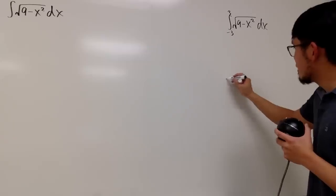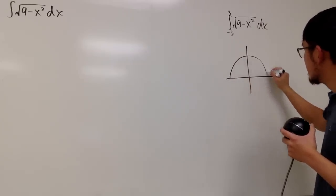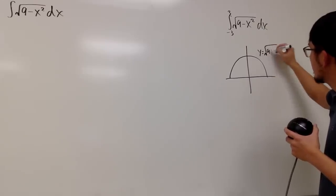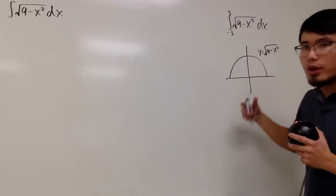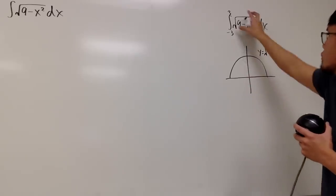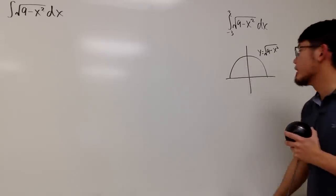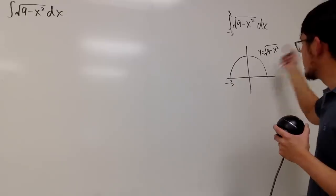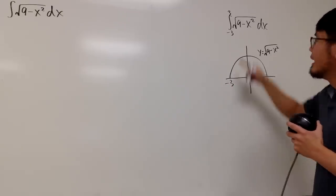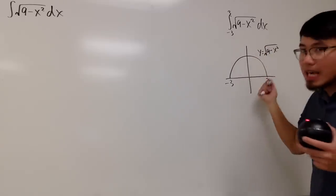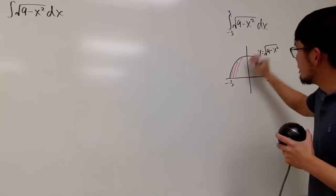Let me show you this. If you graph square root of 9 minus x squared, it's a semicircle. You can square both sides and put the equation in standard form, but with the positive square root it's just a semicircle. We do have the radius being 3, so this is negative 3 to positive 3. This calculates the area under the curve from negative 3 to positive 3.